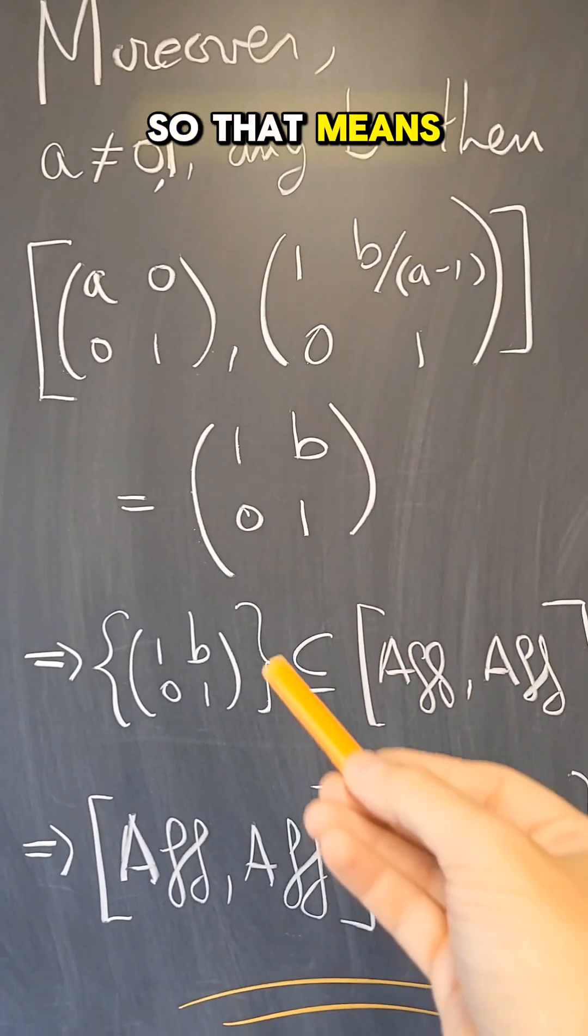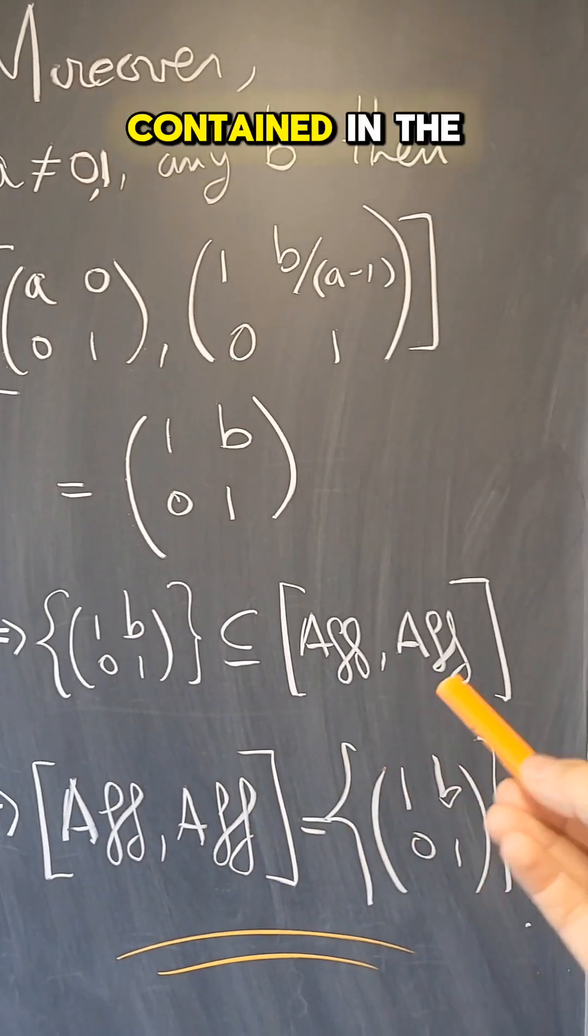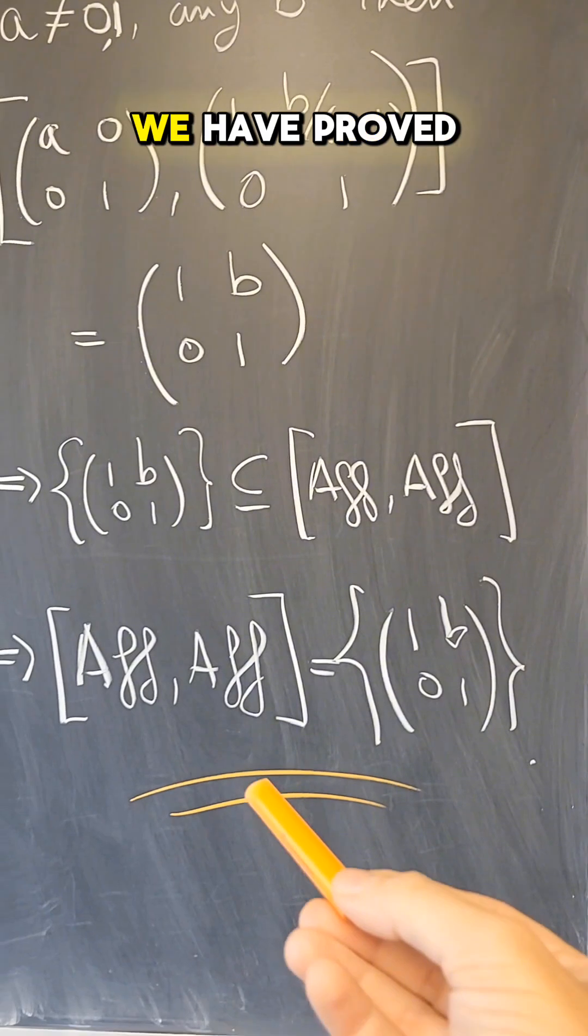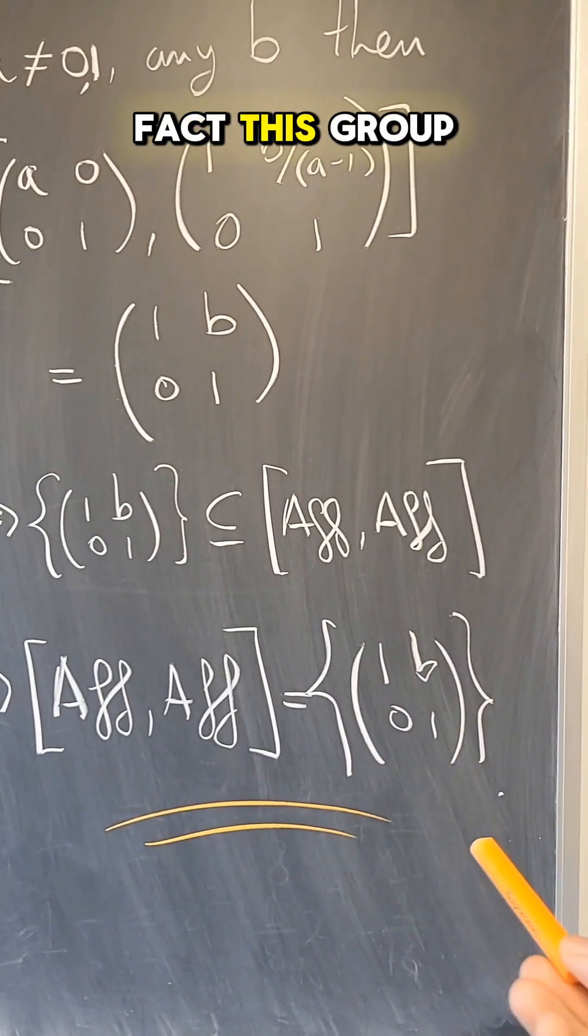So that means that this group, which is the kernel, is actually contained in the commutator subgroup. But we had proved the reverse inclusion, and therefore we have proved that the commutator subgroup is, in fact, this group.